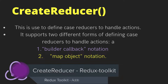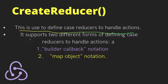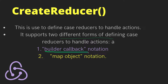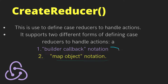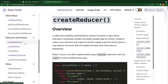Welcome back. In this video we are going to create a reducer using Redux Toolkit. This is a function to define case reducers to handle actions. It supports two different forms: builder callback notation and map object notation. So we have two ways of creating reducers in our application. Let's go to the official documentation and see how createReducer works — click on createReducer.